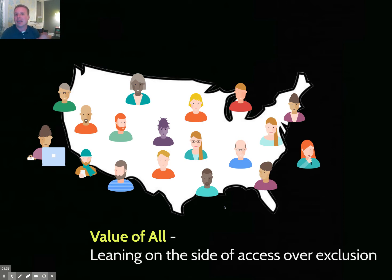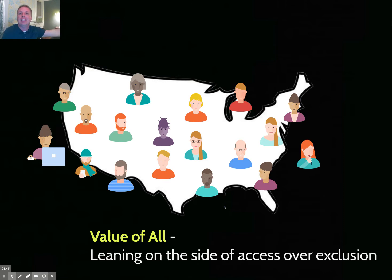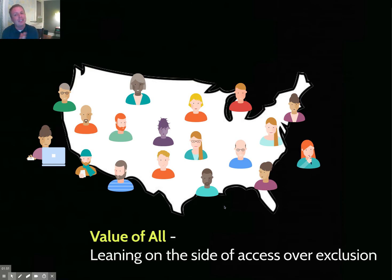In that singular-path model, a kid that doesn't fit on that path isn't seen as appropriate for the setting. The response was to find a different setting with a path suited for them — a more singular path. That said, the word 'singular path' is too simple, because even in yesterday's classrooms we had teachers differentiating and adapting content.